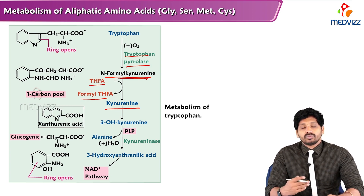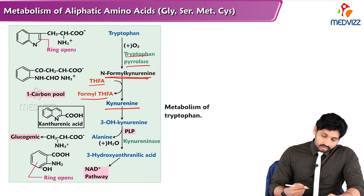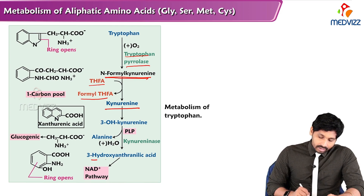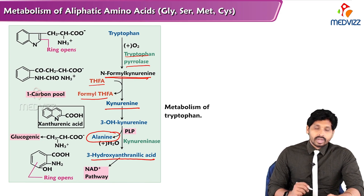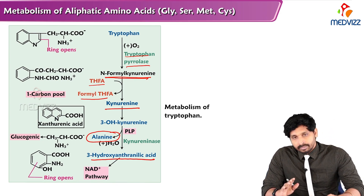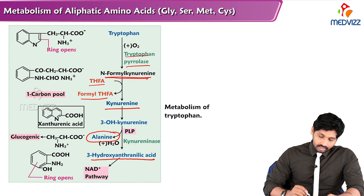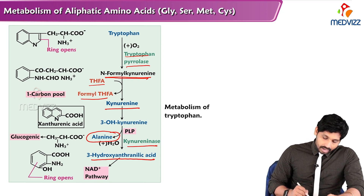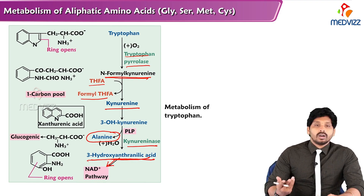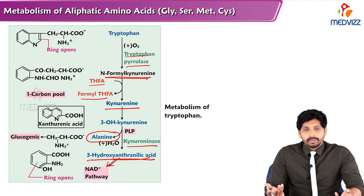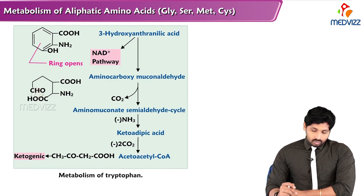From kynurenine, a hydroxyl group is added to form 3-hydroxykynurenine. This 3-hydroxykynurenine is converted to 3-hydroxyanthranilic acid, releasing alanine in the process — via the enzyme kynureninase, which is PLP-dependent. Alanine enters the gluconeogenic pathway, and from 3-hydroxyanthranilic acid there is synthesis of NAD+ and then NADP+.